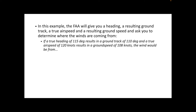Here's the question. If a true heading of 115 degrees results in a ground track of 110 degrees, and a true airspeed of 120 knots results in a ground speed of 108 knots, where is the wind from? We have a true airspeed greater than our ground speed, so our ground speed is less — we know we have some sort of headwind. And we have a true heading and a ground track to consider.